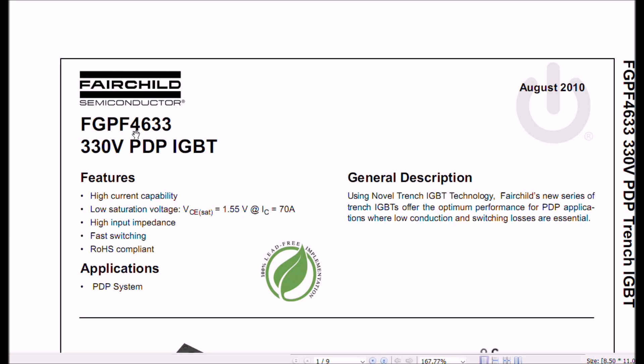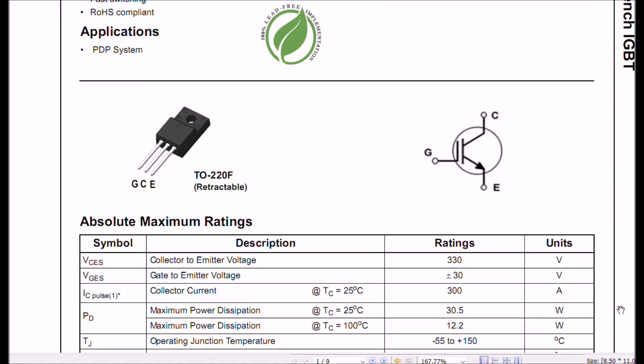Now let's look at the FGPF 4633. This one is rated at 330 volts. These type are used in things like inductive heating element circuits used on ranges. Its forward voltage collector emitter sat is 1.55 volts at 70 amps. That's pretty good. That's a lot of power. What this means is a low VCE means it doesn't heat up a ridiculous amount. This is sort of a plastic TO220 type case. Here is your symbol again. This one is rated at 330 volts. And the gate to emitter voltage is 30 volts, not 20.